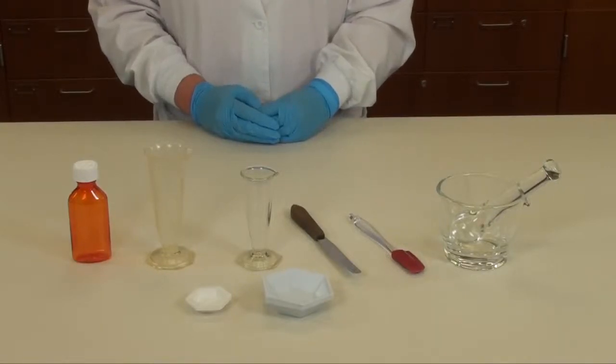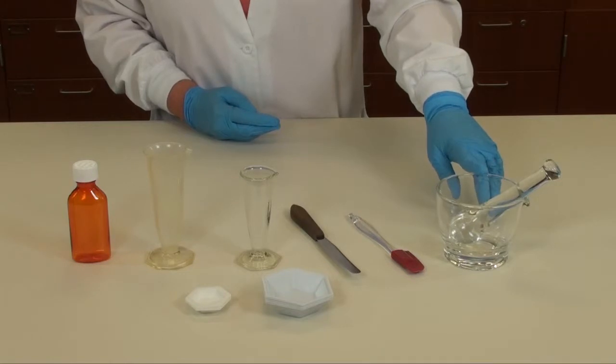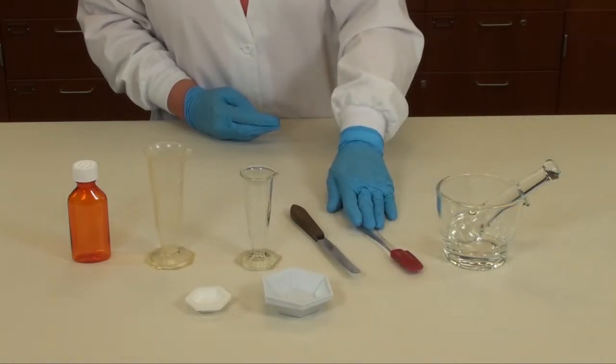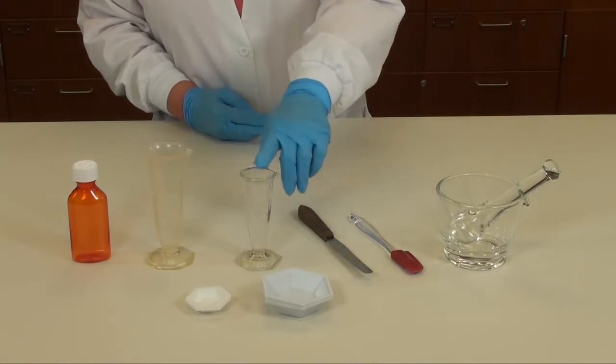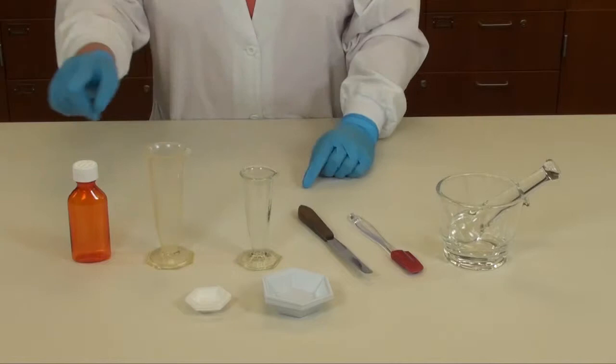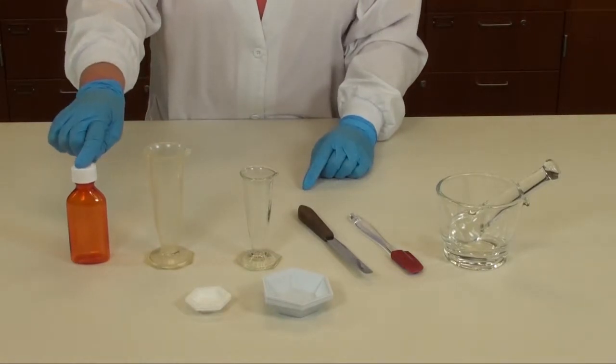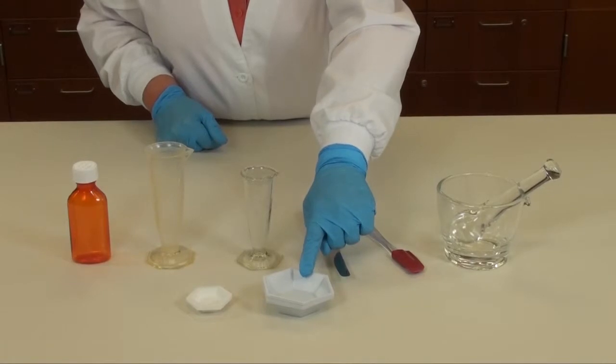The required equipment for suspensions will be a glass mortar and pestle, a rubber spatula, a small metal spatula, a two or four ounce graduated conical, a three ounce oval prescription bottle, and weigh boats, both medium and small.